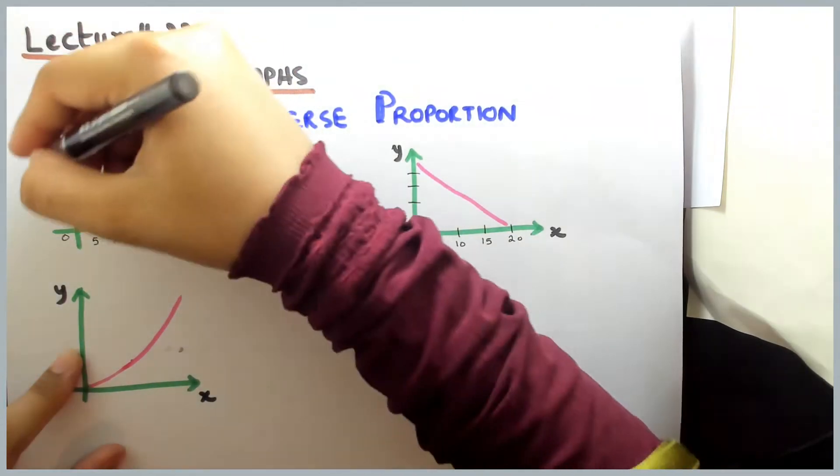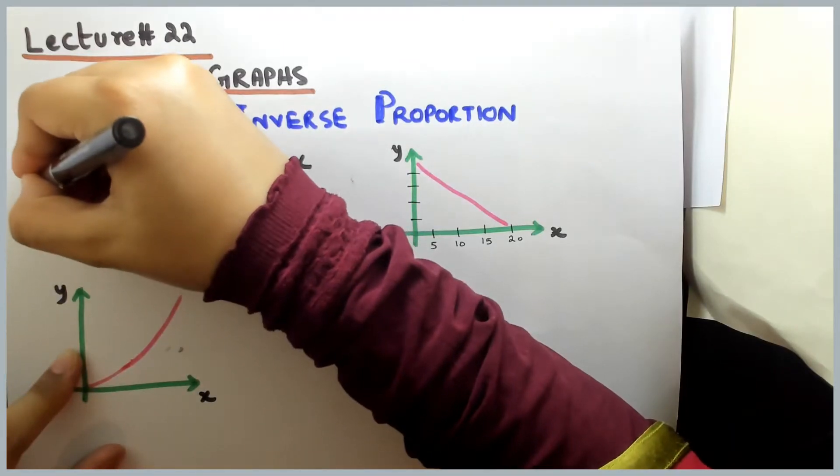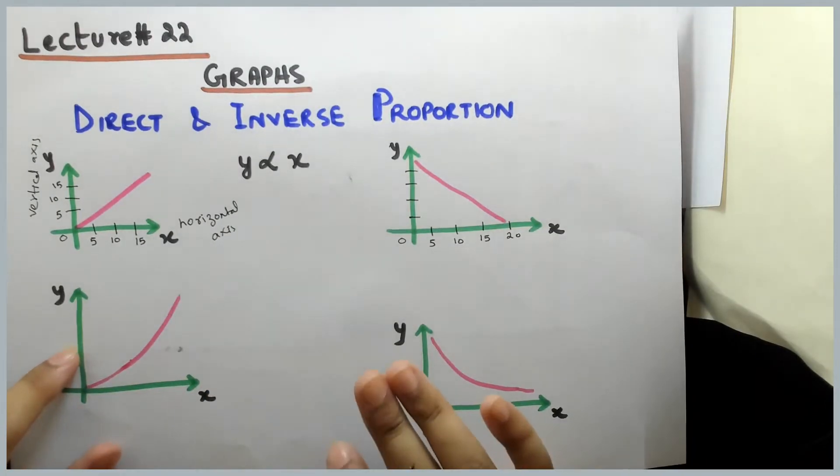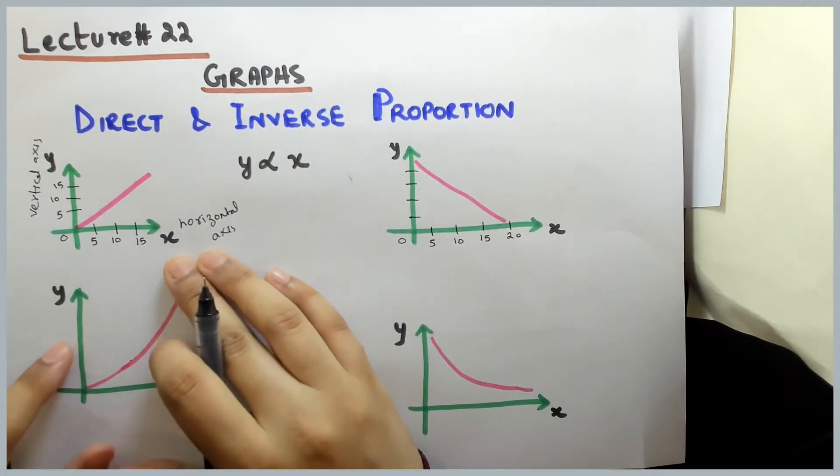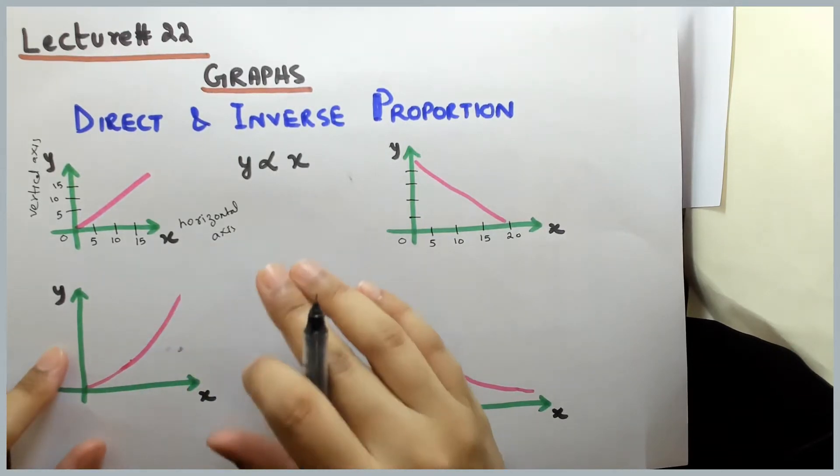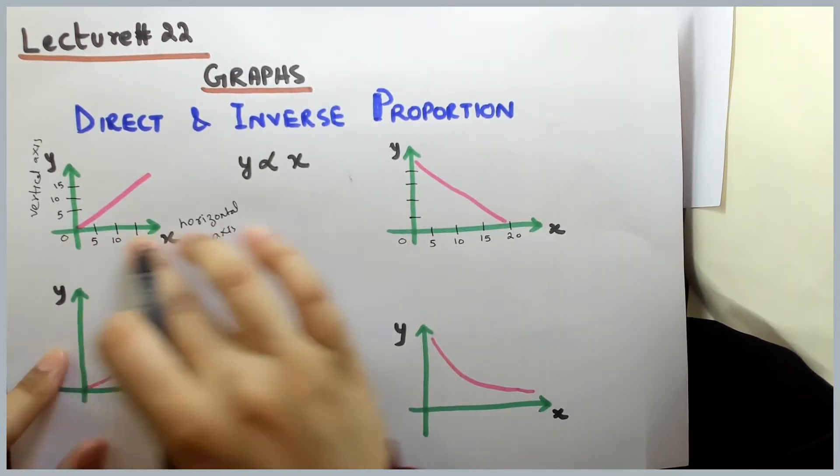And this is your vertical axis. Where do you forget x axis and y axis? Now there is x, y, or a, b, c, whatever. You just need to know that this is horizontal axis and this is your vertical axis.